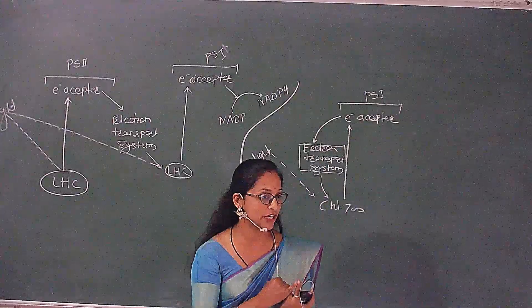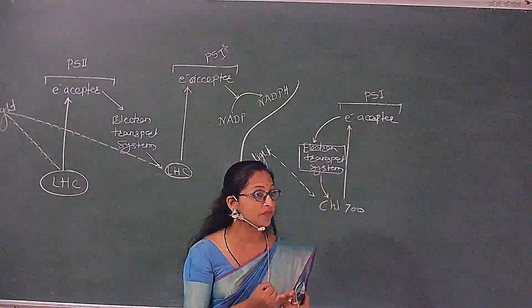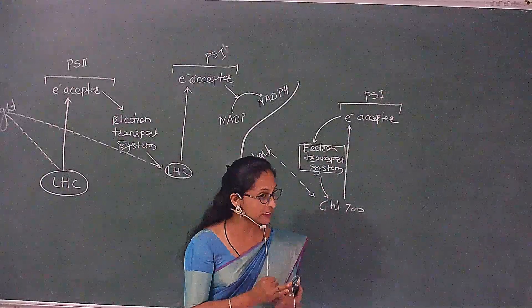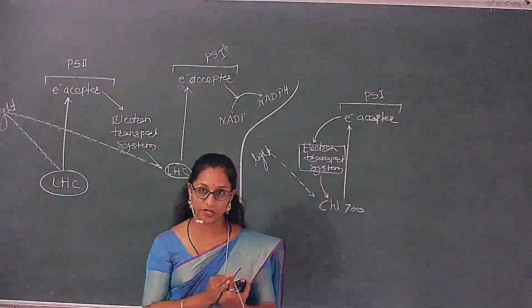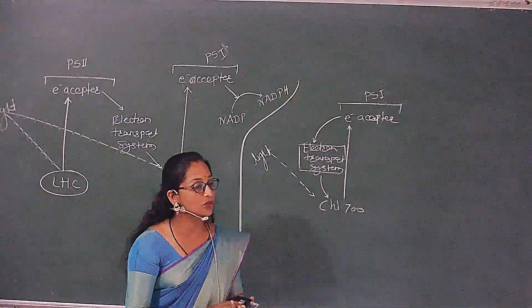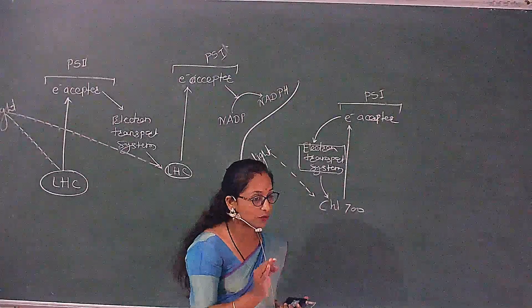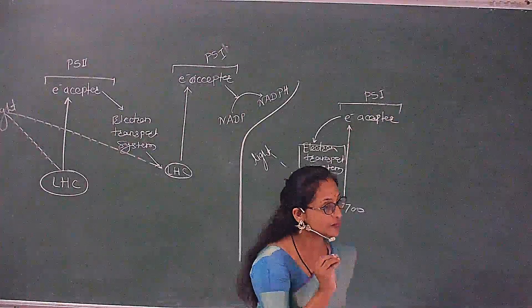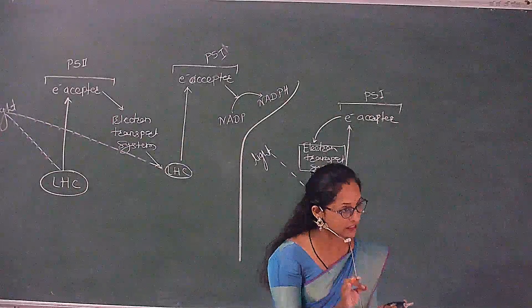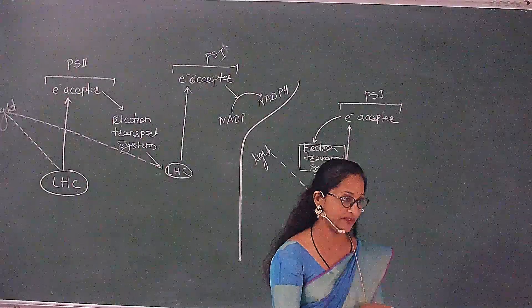First, photophosphorylation. Second, oxidative type of phosphorylation. And third, substrate level phosphorylation. What is meant by phosphorylation? Synthesis of ATP — it is called phosphorylation.